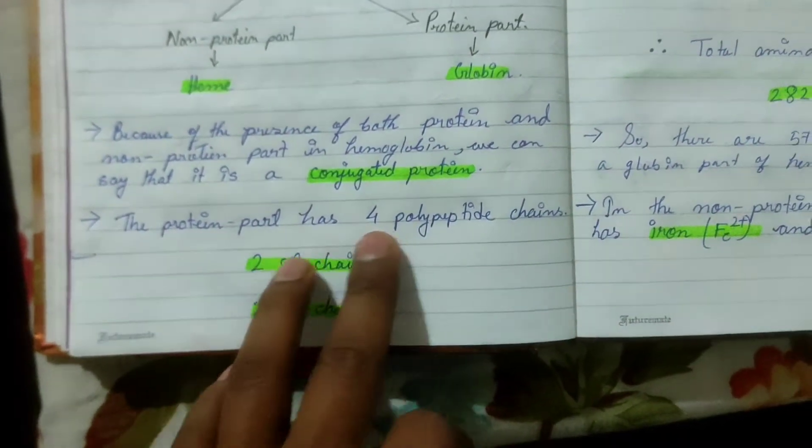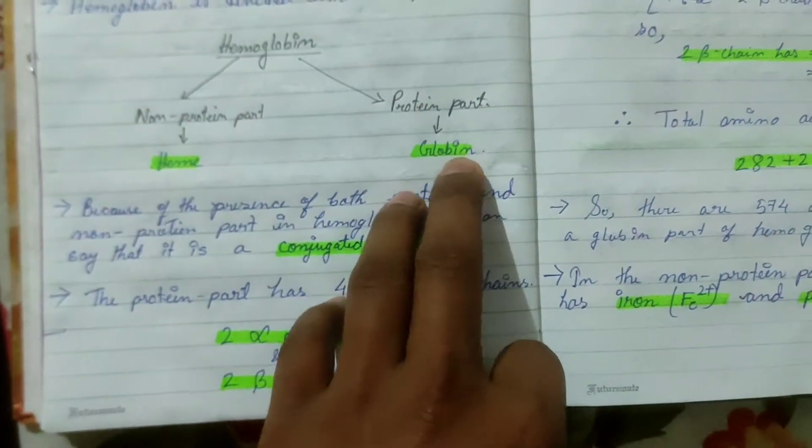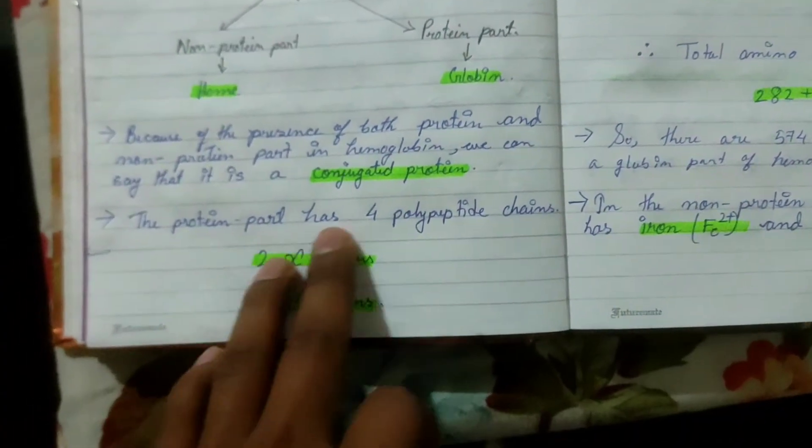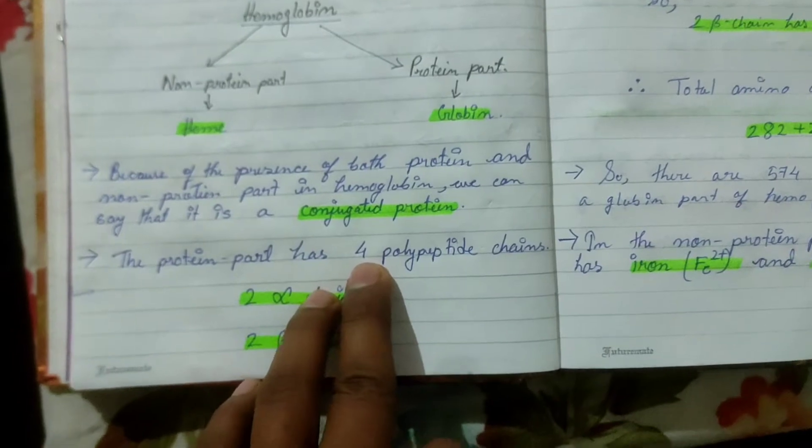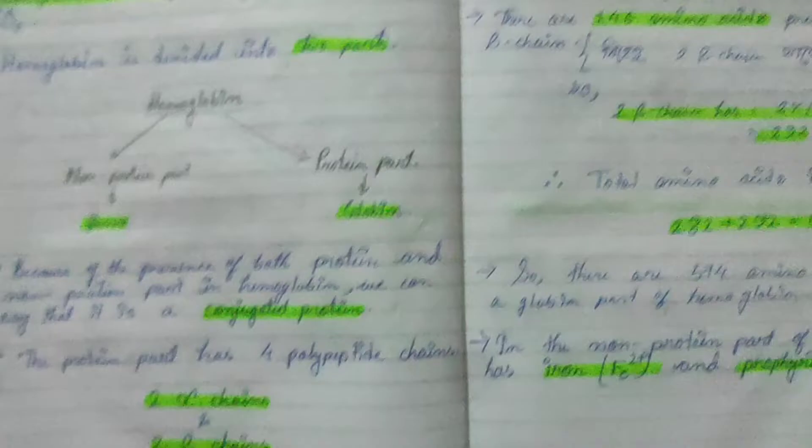The protein part has four polypeptide chains: two alpha chains and two beta chains.